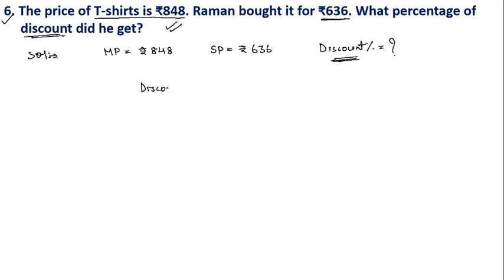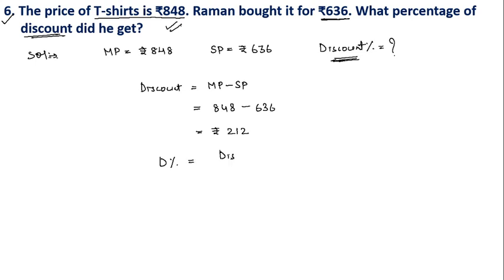Discount is calculated by subtracting the selling price from the marked price: ₹848 − ₹636 = ₹212. Now, the formula for discount percent is: Discount% = (Discount ÷ Marked Price) × 100.